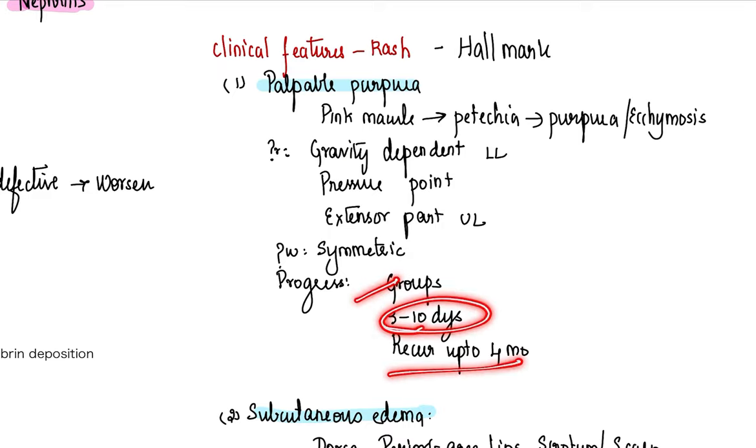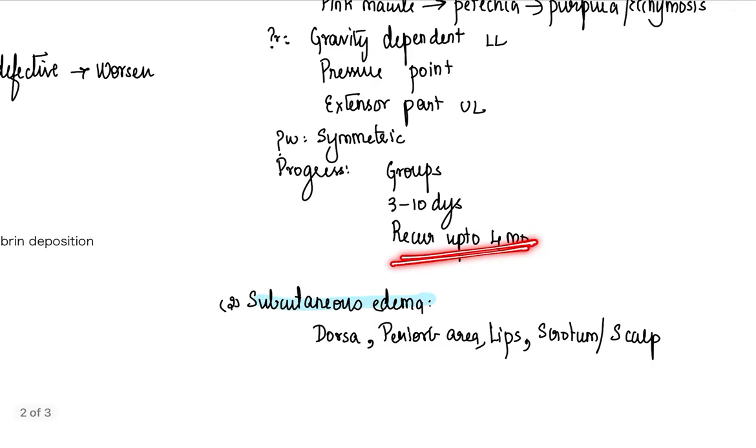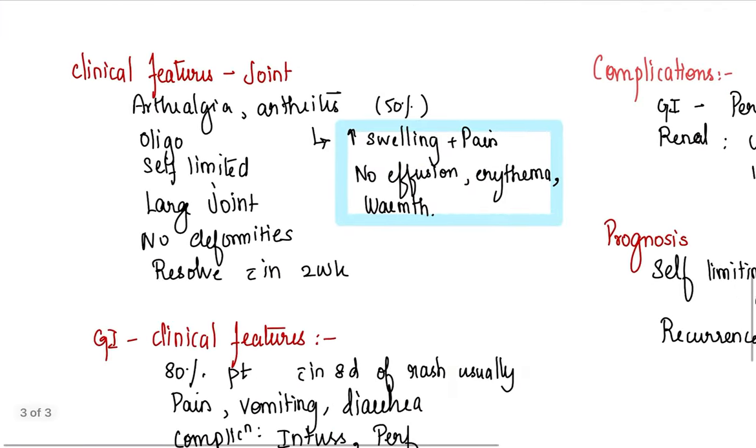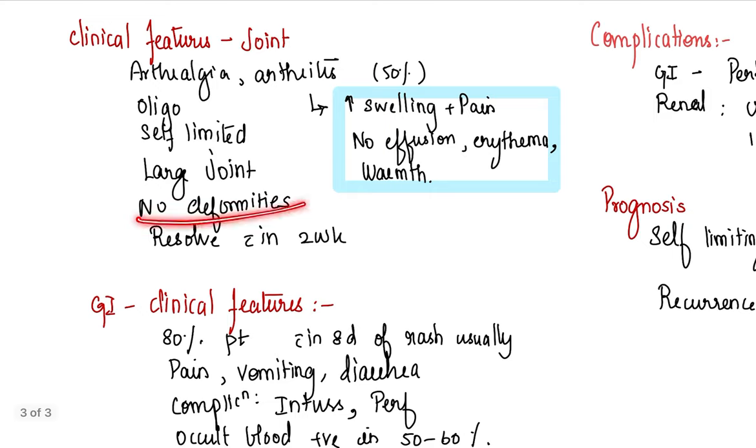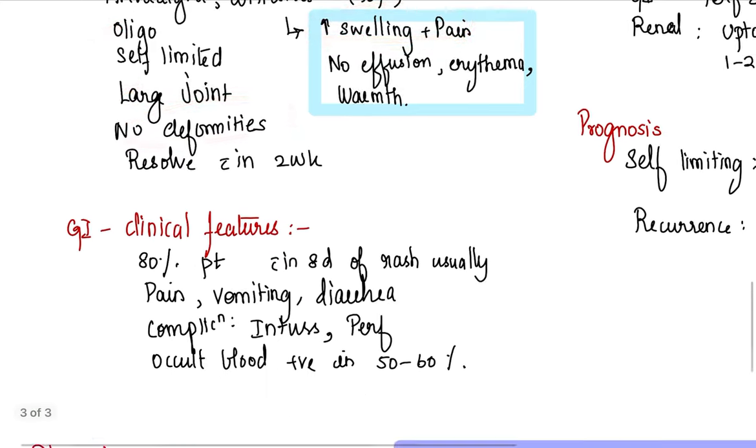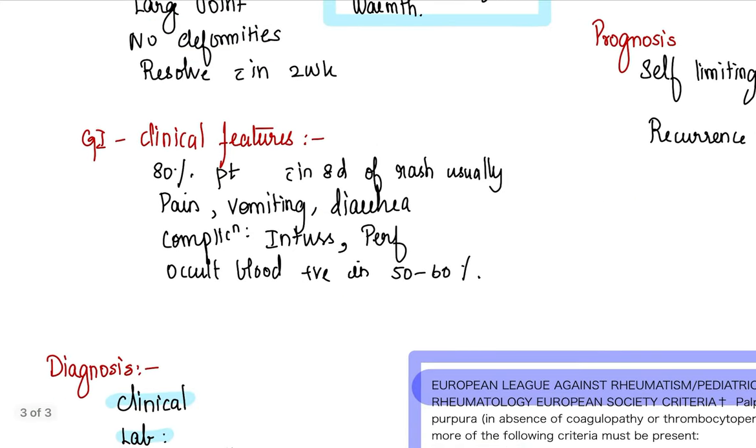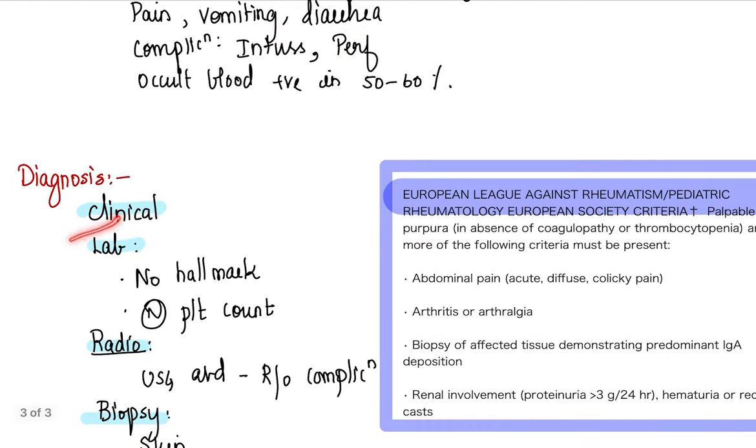Rash is a palpable purpura, evolves from a macule to an ecchymosis, seen in symmetric, gravity-dependent, pressure points, occurs in clusters, lasts for three to ten days, can recur up to four months. This recurrence up to four months is a commonly asked viva question. Joint pain is non-deforming, large joint involvement, generally oligoarthritis with more predominant swelling and pain. Gut manifestation is just pain, vomiting, diarrhea. You have to watch out for intussusception and perforation.